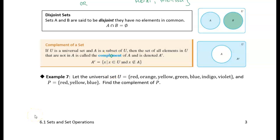So it's the other part of the set. If you have a set A that's part of a universal set, the complement of A is everything that's outside of A, everything that's in the universal set but not part of A.